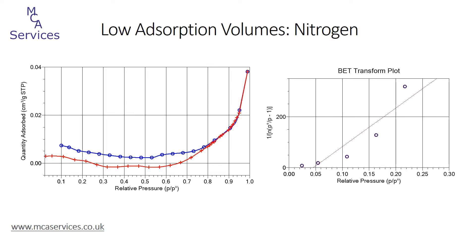To illustrate the problem of applying nitrogen adsorption to very low surface area samples, we've analyzed a low area polymer powder sample. The nitrogen adsorption-desorption isotherm is shown here on the left and we can see that adsorption volumes are very, very low. The isotherm is very irregular and it appears that the adsorption isotherm actually shows a decrease in volume between 0.1 and 0.5 relative pressure, which in reality just isn't possible.